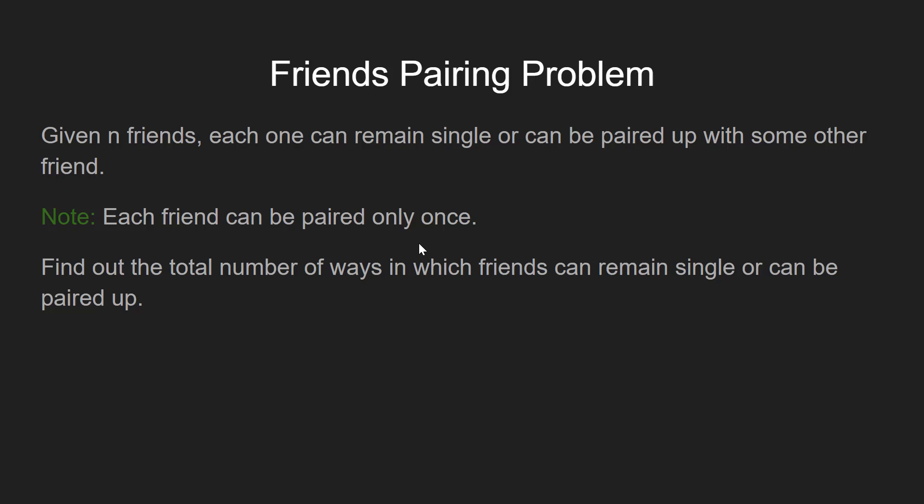It is important to note that each friend can be paired only once. If you pair person A with person B, then you cannot pair A or B with C again. This is a necessary constraint.